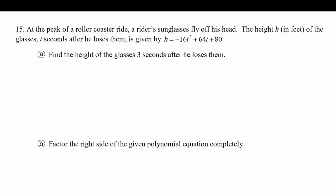Let's try one more problem. And this one says, at the peak of a roller coaster ride, the rider's sunglasses fly off his head. The height h in feet of the glasses, t seconds after he loses them, is given by h = -16t² + 64t + 80. Find the height of the glasses three seconds after he loses them.